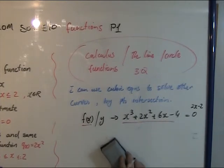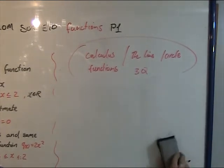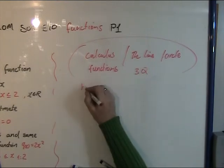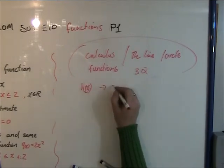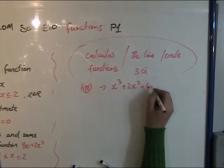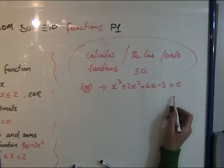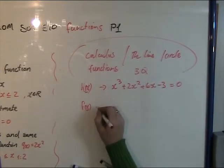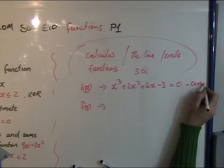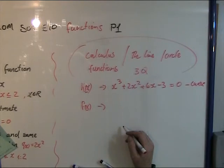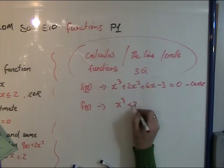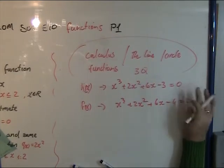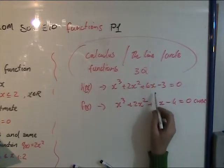So k of x is equal to x cubed plus 2x squared plus 6x minus 3 is equal to 0. Very important — all of this is equal to 0. And it says solve for f of x. f of x is equal to — so this is your curve. You've drawn this curve out and you're going to use this to solve this. f of x is x cubed plus 2x squared plus 6x minus 4 is equal to 0. This is your curve — use the curve to find the solutions to that.